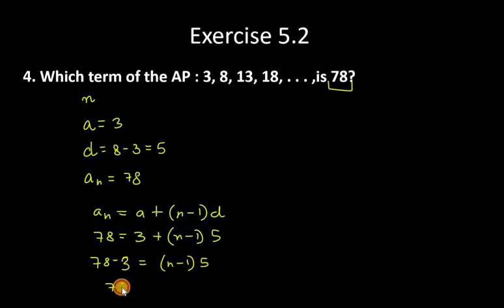78 minus 3 is 75. 75 = (n-1)×5. Now we divide by 5, so 75/5 = n-1.